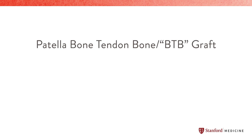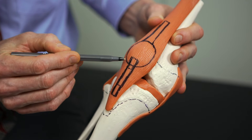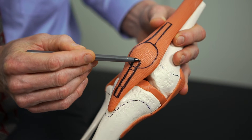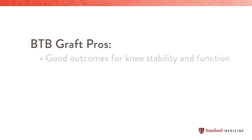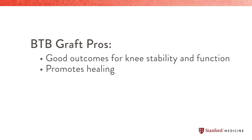The patellar bone-tendon-bone graft is taken from the kneecap on the front of the knee, including part of the kneecap and part of the shin bone with the graft in between. This graft has been around a long time — over 30 years — and the overall outcomes are very good for knee stability and function. Because the graft has bone tissue on both ends, it has excellent healing characteristics, and many surgeons are very comfortable with this technique.